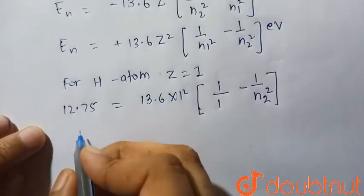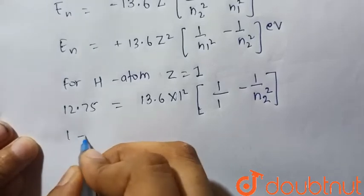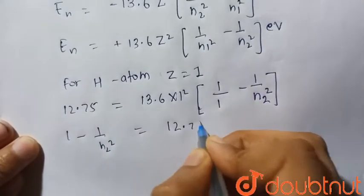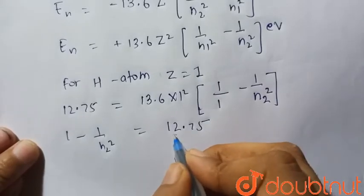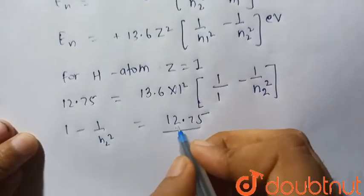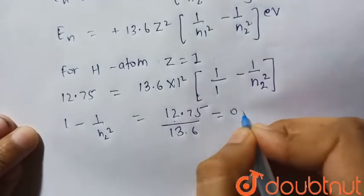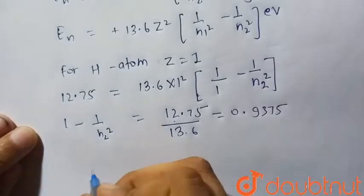So 1 minus 1 by N2 square will be equal to 12.75 upon 13.6 which will be equal to 0.9375.